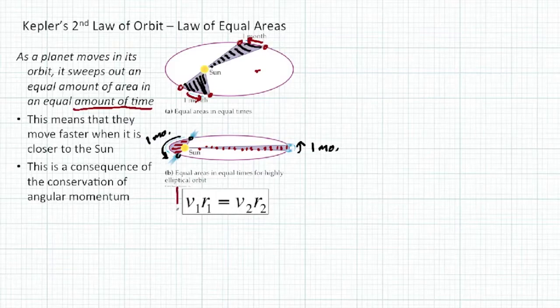We can sum this up in this equation: at any two points of an object around the body it's orbiting, the velocity at point 1 times the radius or distance from that object 1 is going to equal velocity 2 times the radius or distance that object is from the sun 2. This will come in handy for us a little bit later on.